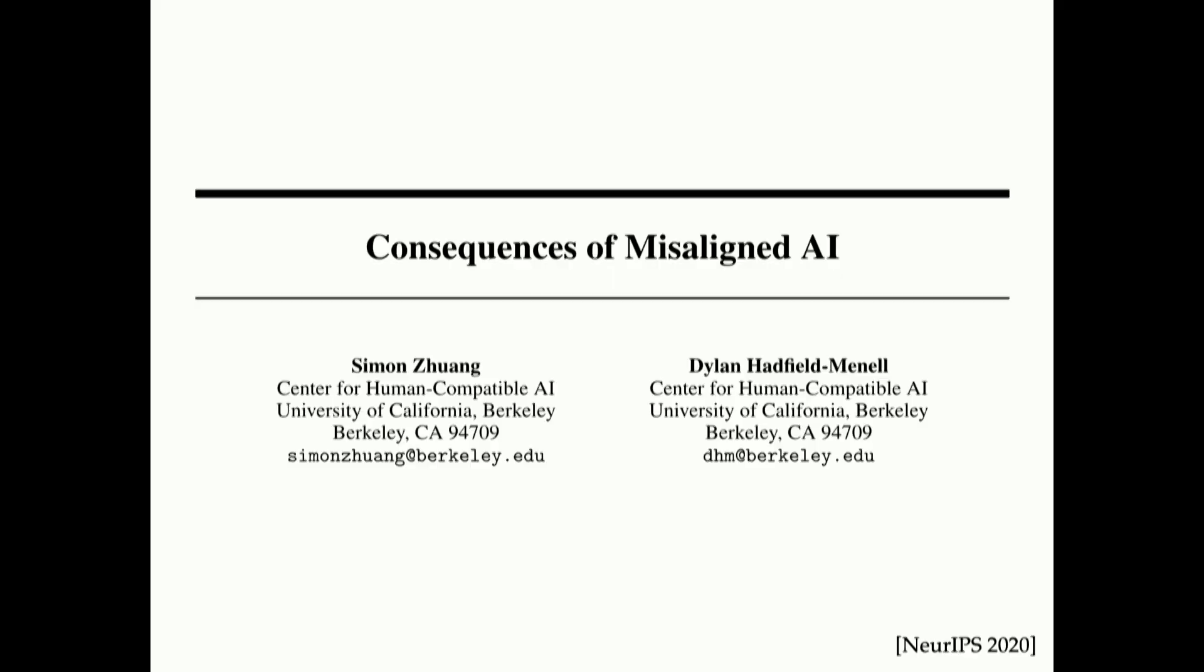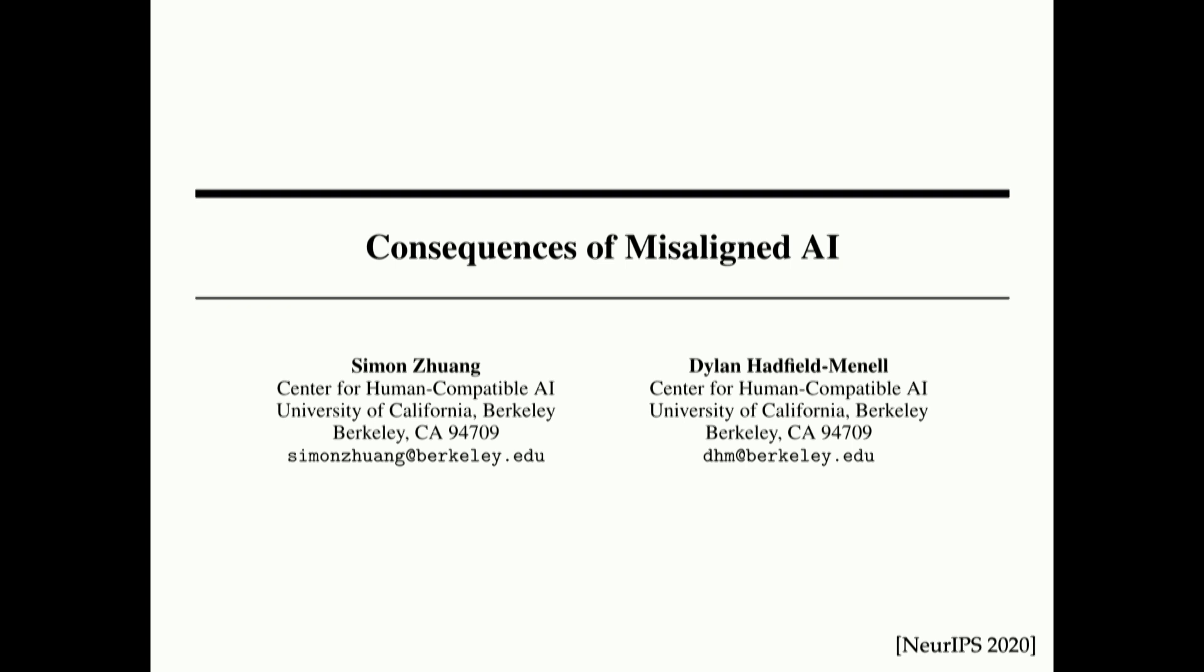And so we looked at this in a paper called Consequences of Misaligned AI. We built up a model where we assumed that there's a true reward function, R star, that depends on some features, R to the L. And there's a proxy that depends on a subset of those features. So lots of things we care about, only a small set we can measure. And then we assumed that there's a shared resource constraint between those.